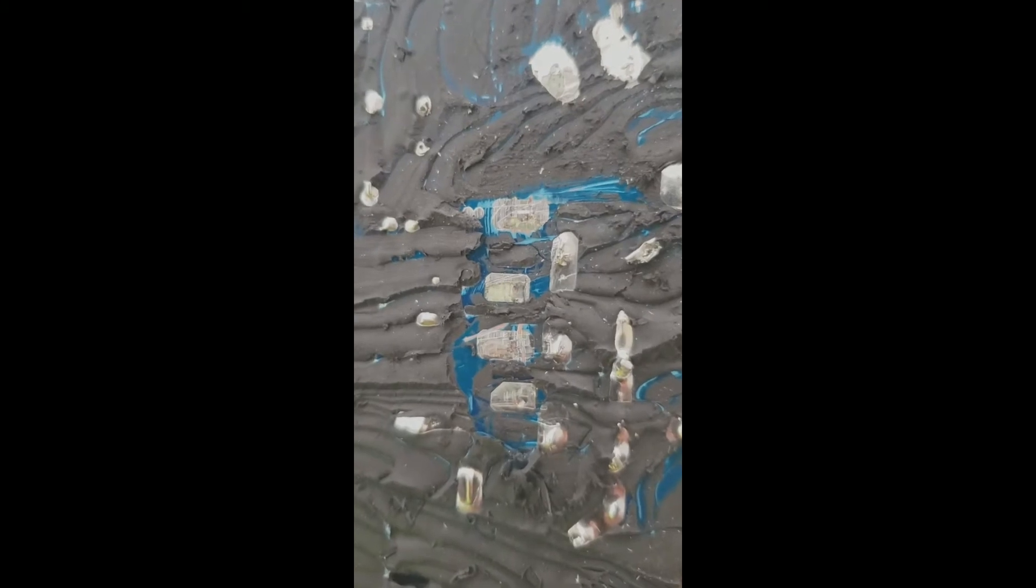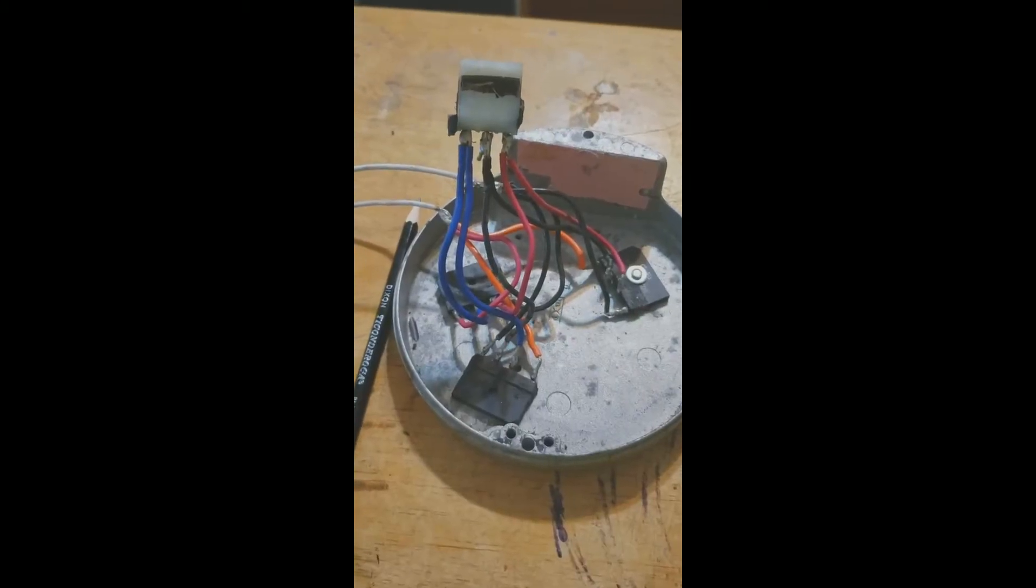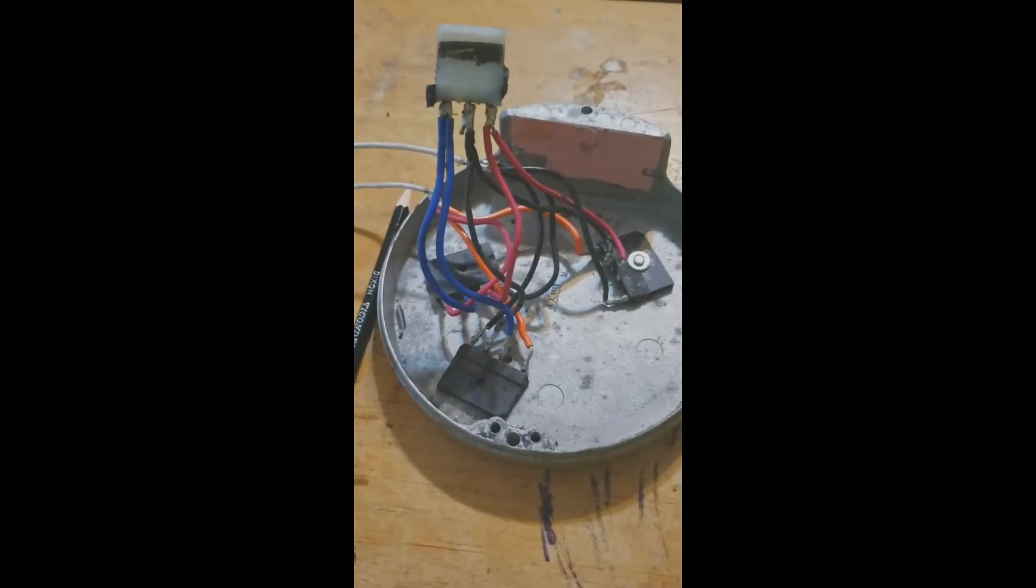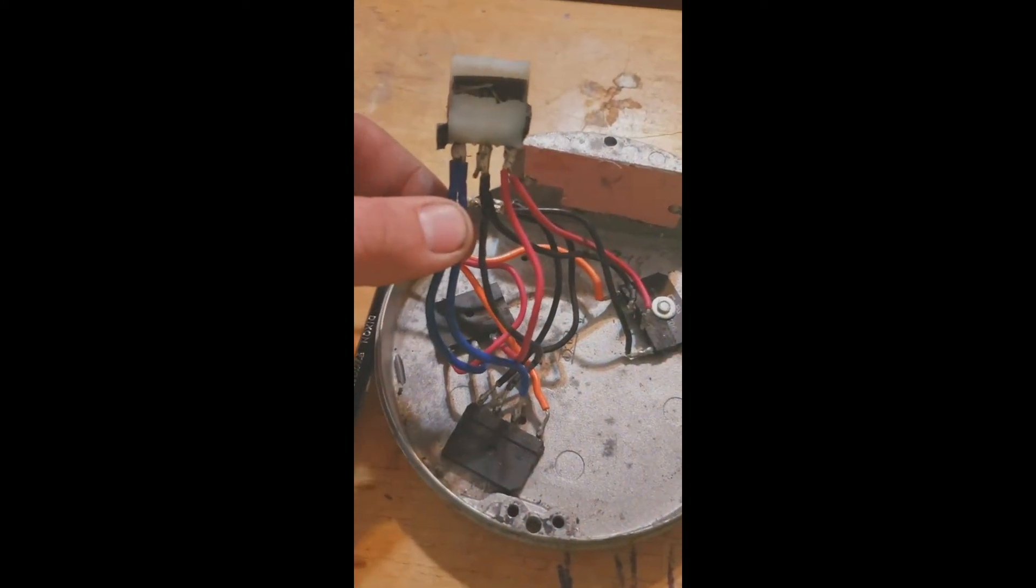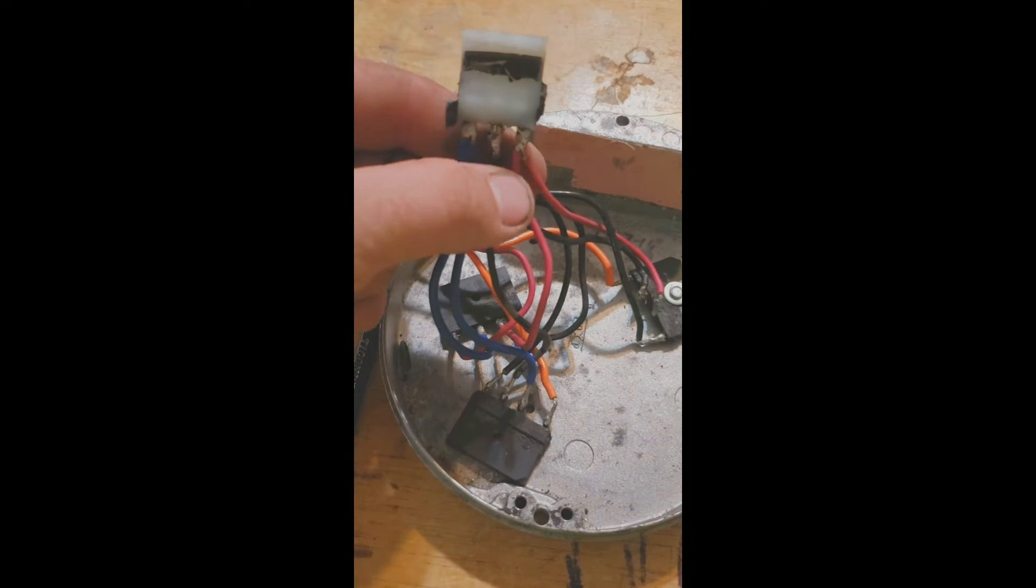The power being generated by the generator unit is three phase power coming in. Two wires are blue, two are black, and two are red.